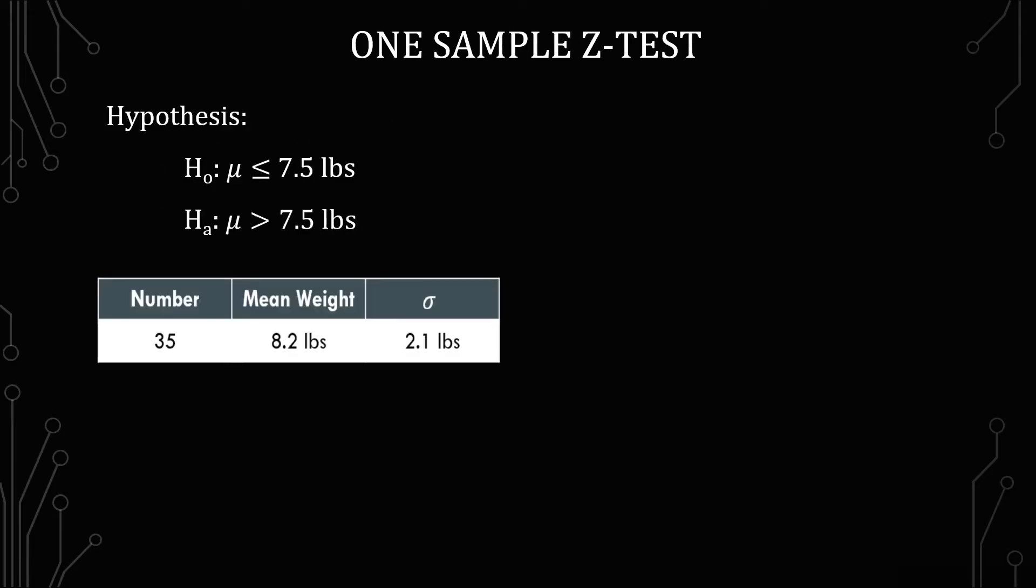So this is what we have for the hypothesis. Given that it's no more than 7.5 pounds, we have the null hypothesis being mu less than or equal to 7.5 pounds, and the alternative being mu is greater than 7.5 pounds.